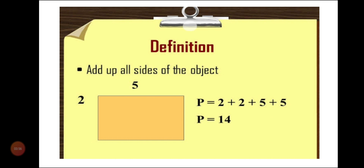Let us take another example. We have a rectangle whose two sides are given: one side is 2 centimeters and the other side is 5. The remaining two sides are not given, but since it is a rectangle, opposite sides are equal. So two sides are equal to 5 each and two sides are equal to 2 each. The perimeter will be 2 plus 2 plus 5 plus 5, which equals 14 units.